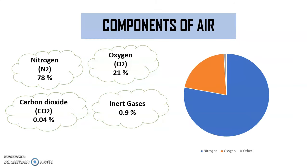Now let us look into the components of air. What are the things that are present in air? There are different gases which are present in air by different volumes. Like nitrogen 78 percent, oxygen 21 percent, carbon dioxide 0.04 percent, inert gases 0.9 percent.